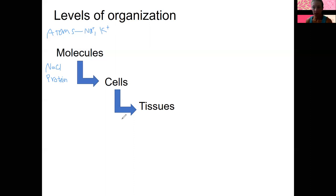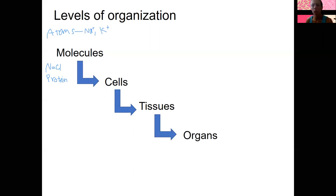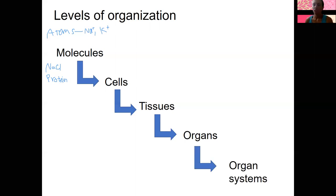Epithelial and connective are the two tissue types I will focus on this week — they're very different in this regard. Overall, groups of cells working together form tissues. Those tissues come together to form organs. Organs are always more than one tissue type, and organs do things such as pump blood, circulate blood, digest food, produce urine, etc. These organs work together to form an organ system.